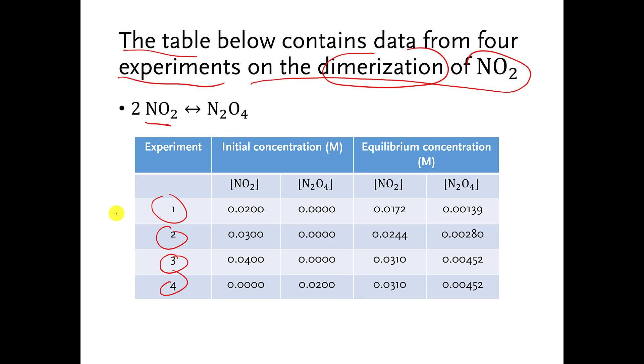And so let's just look at experiment 1. Over here, they're showing you what the beginning concentration in units of molarity are for the reactant, there it is, and for the product. So in experiment 1, the beginning concentration of NO2 was 0.0200 molar. The beginning concentration of N2O4 was nothing. There was none. So there was a whole bunch of, well, some amount of NO2. There was no N2O4.